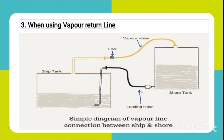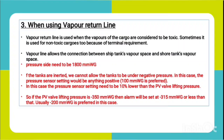As we load cargo and displace vapor, the system should be in equilibrium. We use the vapor line so there is no release of cargo vapor into the atmosphere - meaning we cannot allow the PV valve to lift at any time. To prevent gas release from the tank to atmosphere, we set the pressure sensor at 10 percent less than the PV valve operating pressure, which gives us 1800 mm wg.